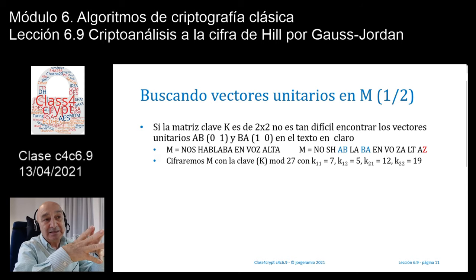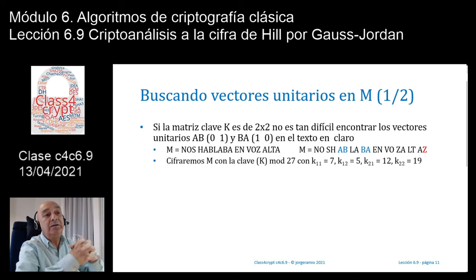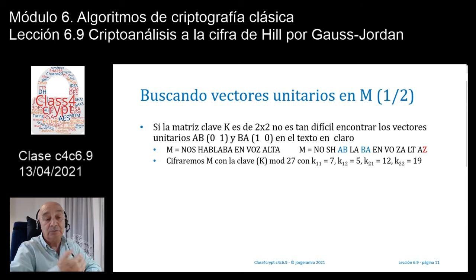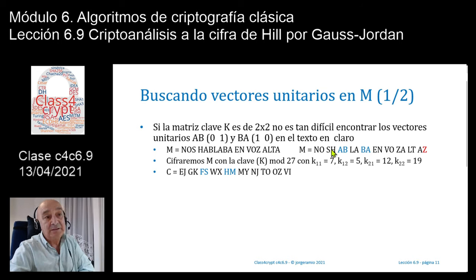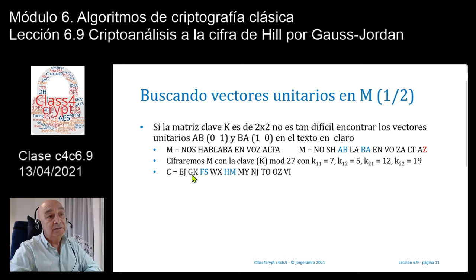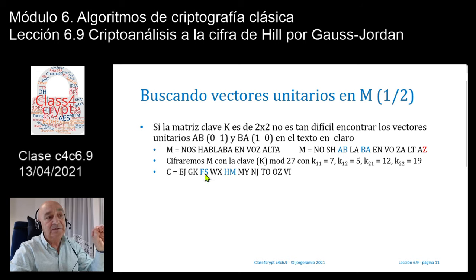Supongamos que cifro este texto en claro con la siguiente matriz de clave desconocida: K1,1=7; K1,2=5; K2,1=12; K2,2=19. Multiplicando filas de la matriz clave por columna del texto en claro, el bloque NO se cifra como EJ, el bloque SH como GK, el bloque AB —que es el primer vector unitario— se cifra como FS, y el bloque BA se cifra como HM. Conociendo que AB se cifró como FS y BA como HM, podemos encontrar la matriz clave.